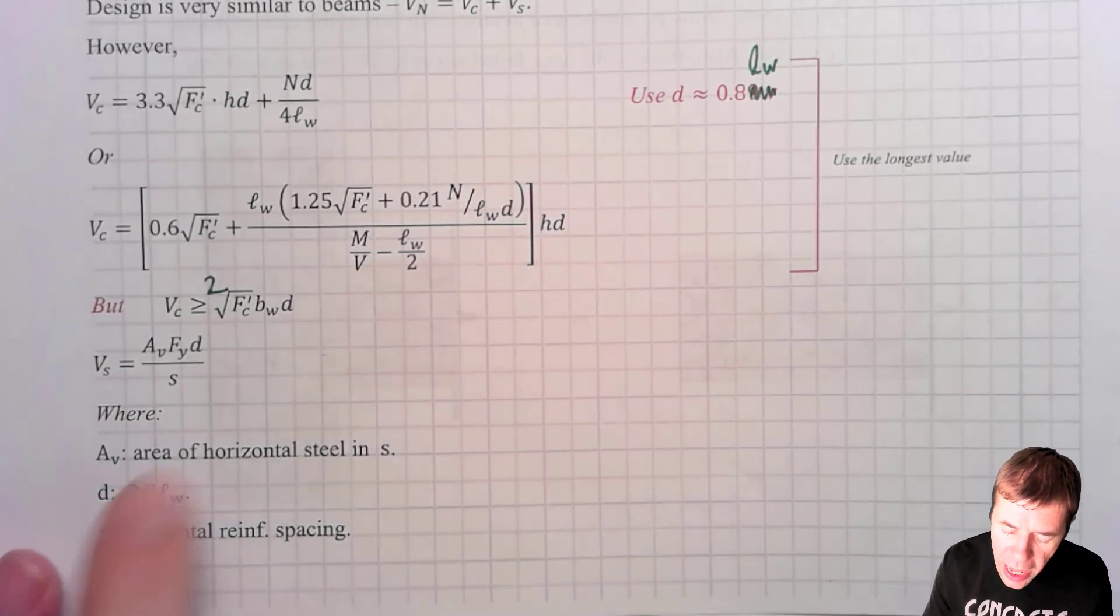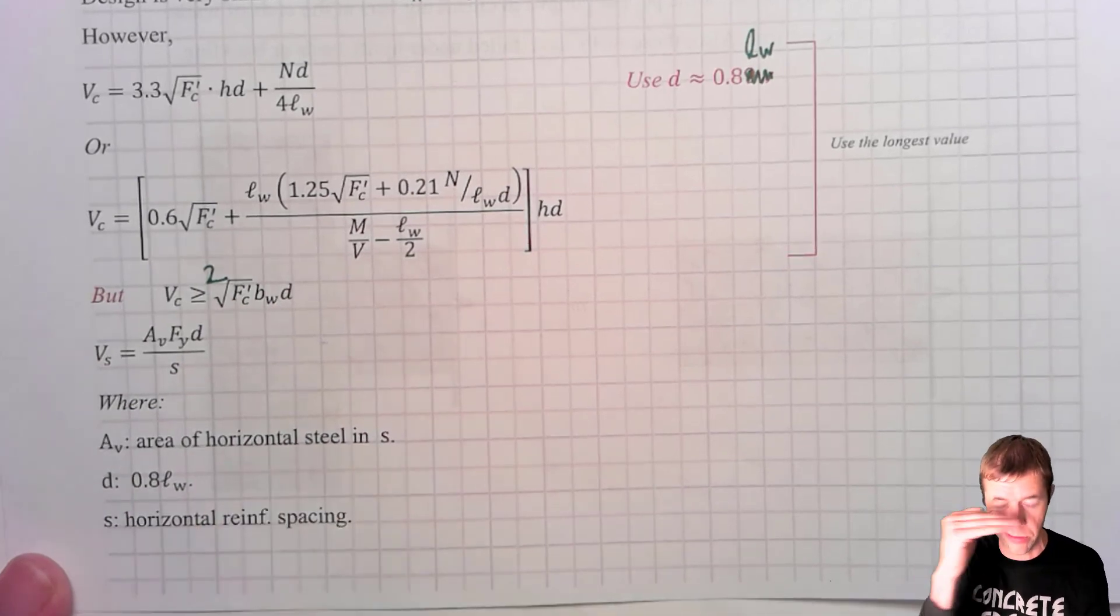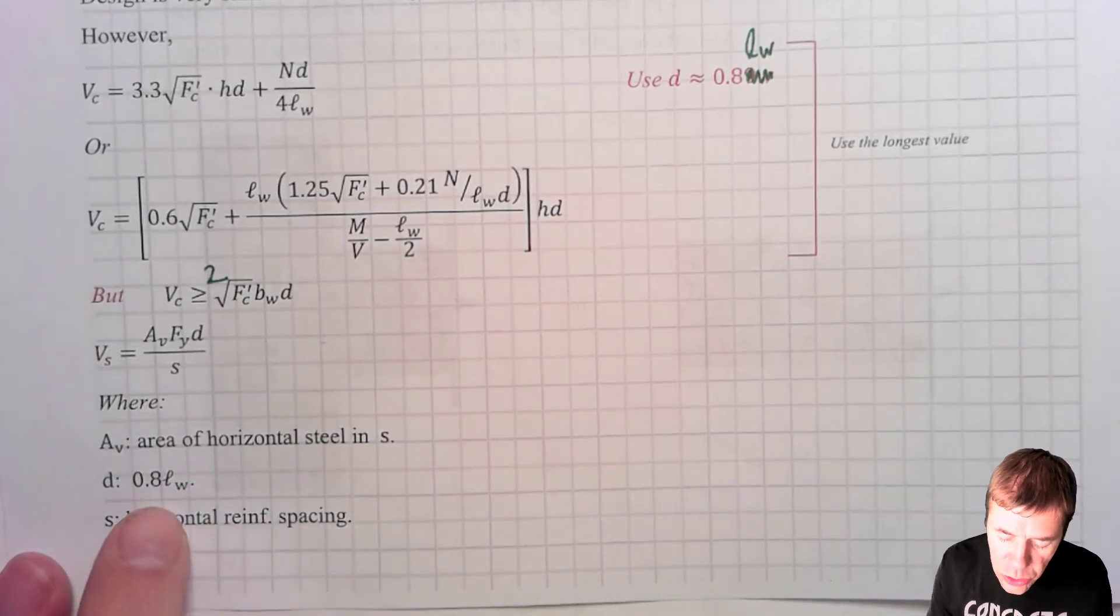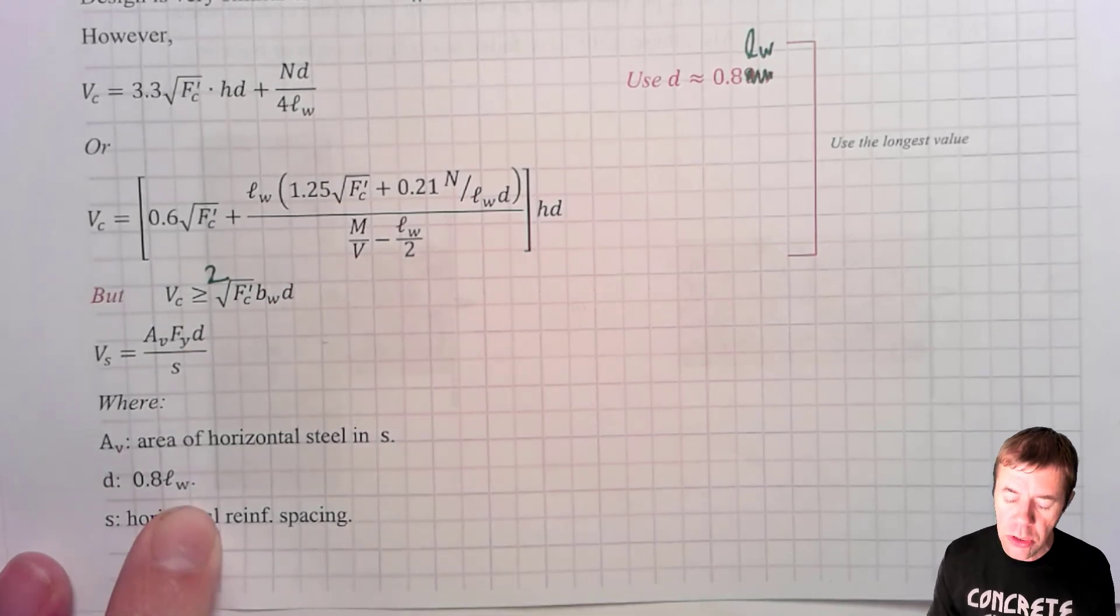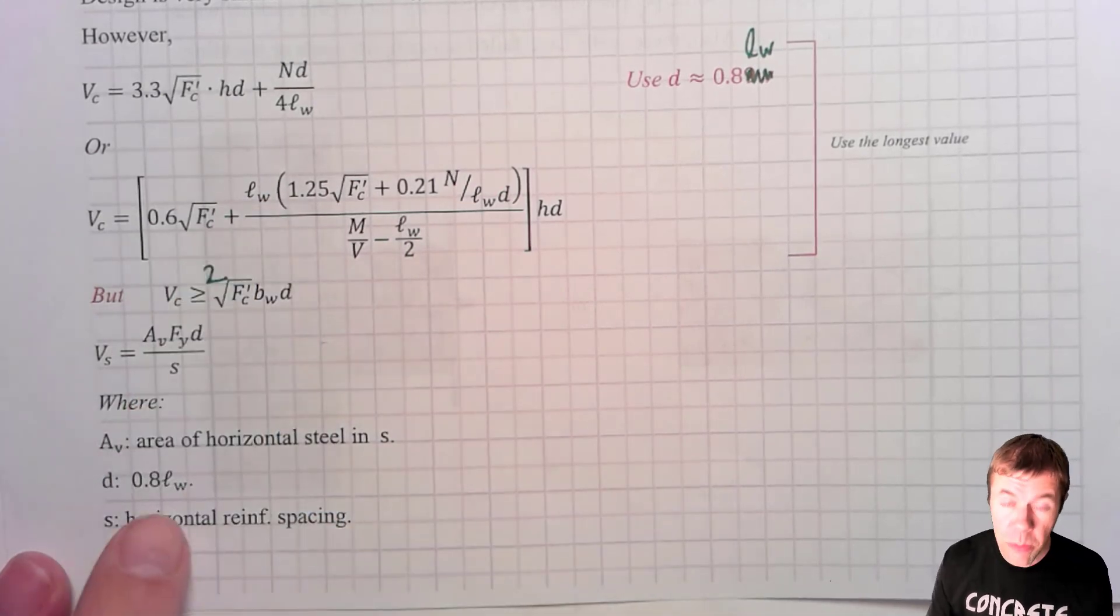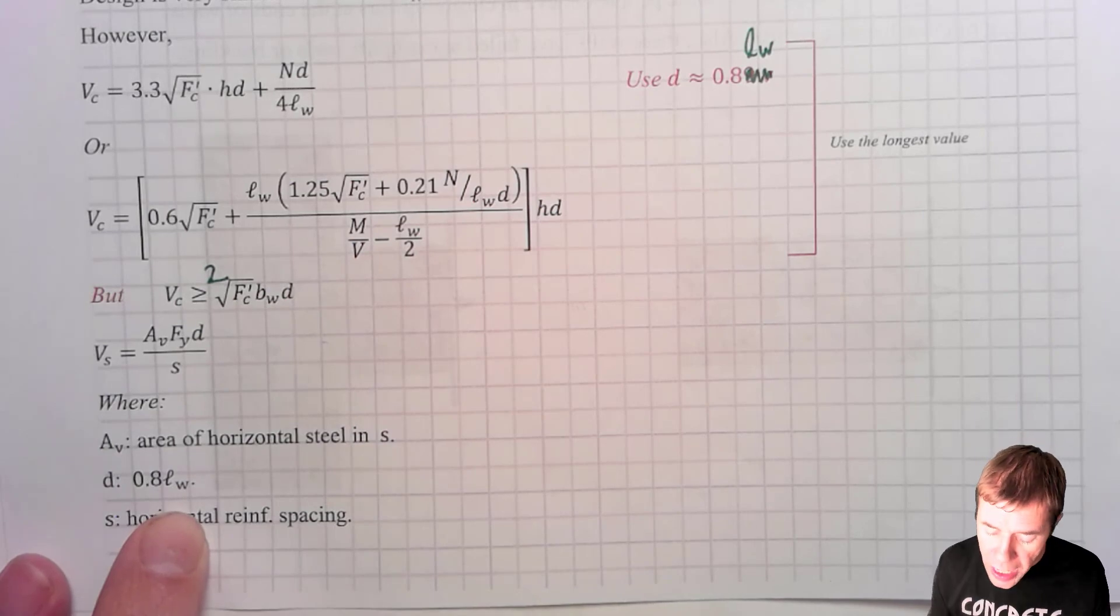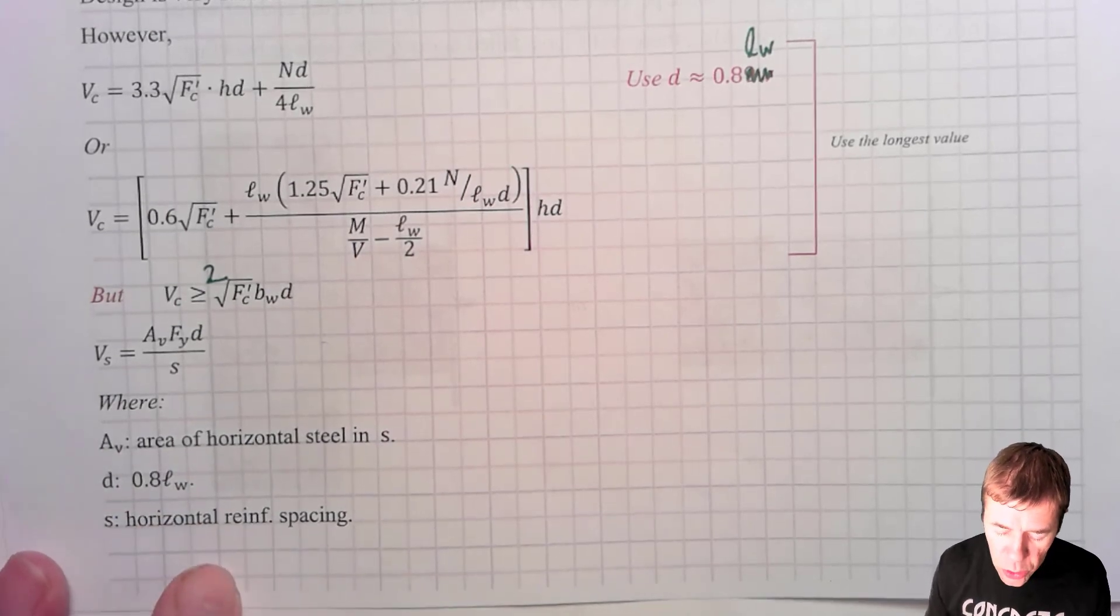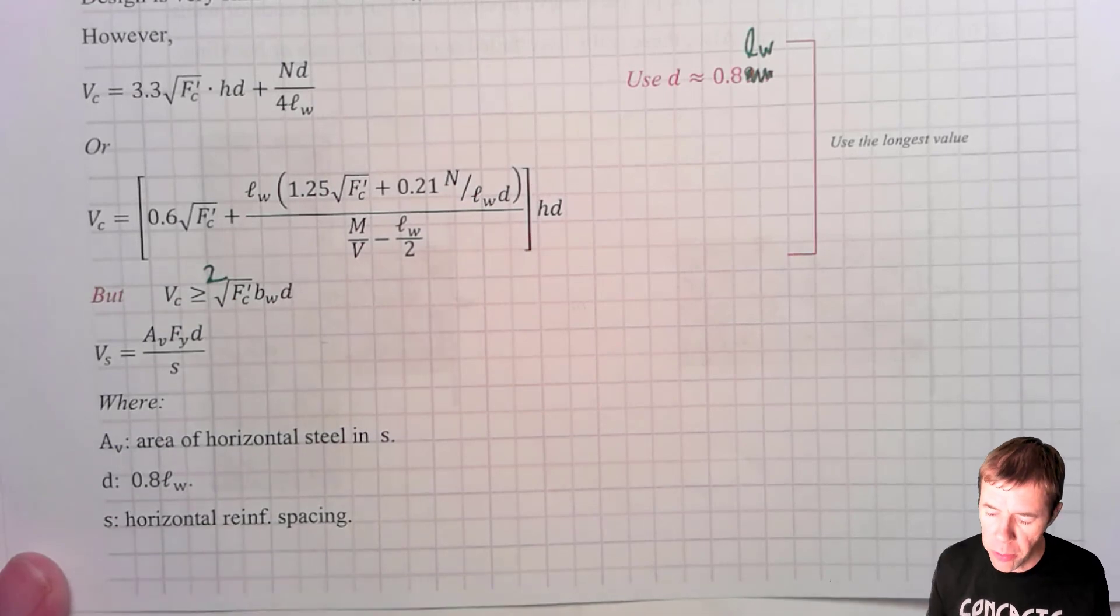But you plug into all of this equation to figure out what your shear capacity is. You're going to then figure out how much V sub S you need. And this is going to be AV. This is the area of your horizontal steel. It goes this way. And your D in this equation is going to be 0.8 times L sub W. Anytime you need D in anything here, you would assume it's 80% of L sub W. And S is going to be your horizontal reinforcement spacing, the spacing of your bar center to center.